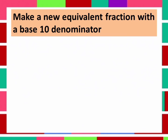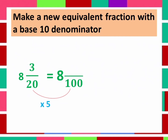How about if we have a mixed number? First, we write 8 here. Make 20 become a base 10 denominator by multiplying 20 by 5, so it will become 100. Also, multiply 3 by 5, so it will become 15. Now, 8 and 3 over 20 is equal to 8 and 15 over 100, and that is equal to 8.15 in decimal.